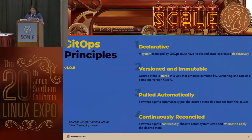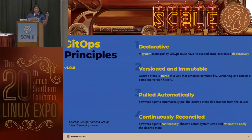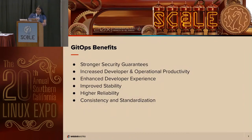The second principle is that the desired state is stored in a way that enforces immutability, versioning, and retains a complete version history — there's no sneaking in a change. It goes back to compliance and audit trail. Third, software agents automatically pull the desired state declarations from the source and continuously observe actual system state, attempting to apply the desired state. The whole idea is that it's a pull model versus the CI/CD push model — something living in your cluster is listening for your desired state and making sure that's what's always realized.